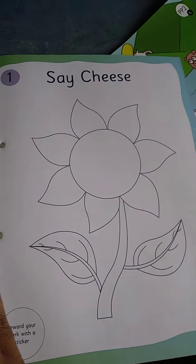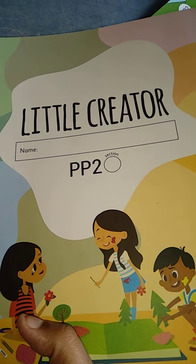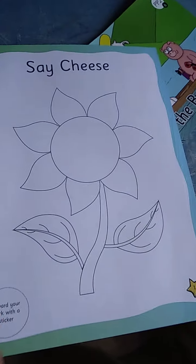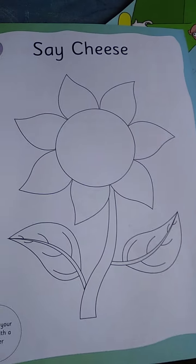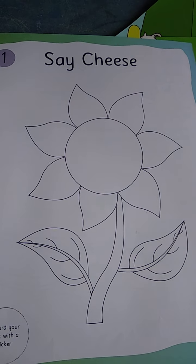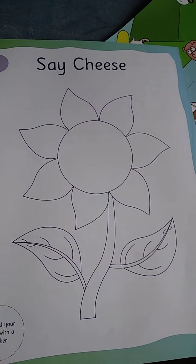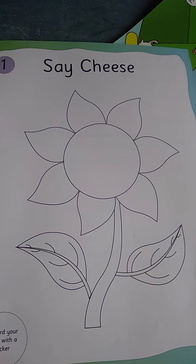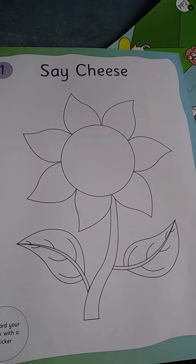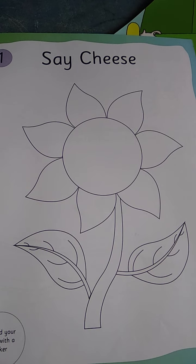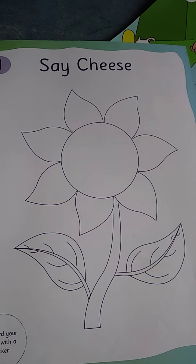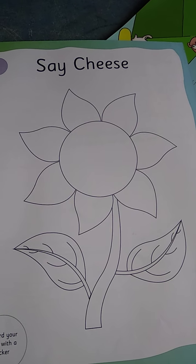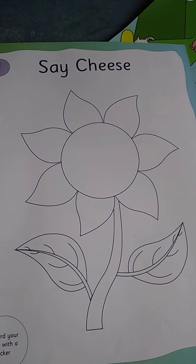So all of you open your little creator book, children. You all have little creator books, right? Open your creator book. Open page number one. See here, what is the first one? Flower.